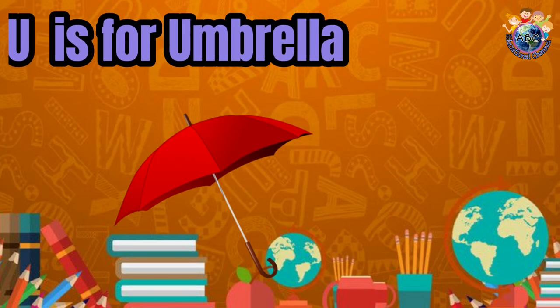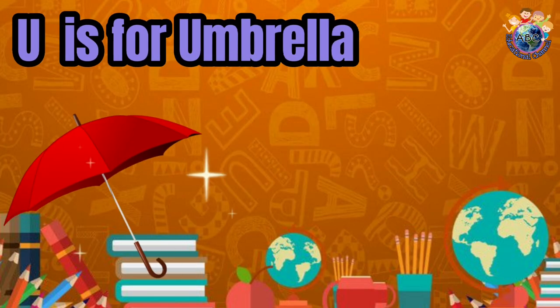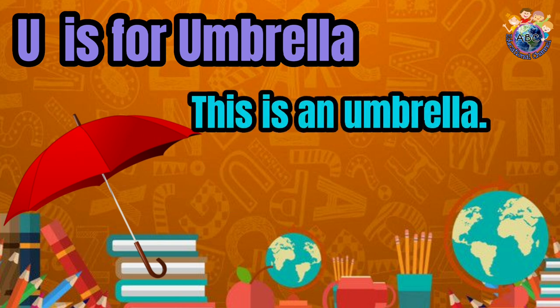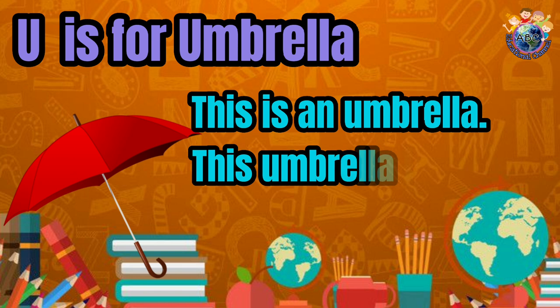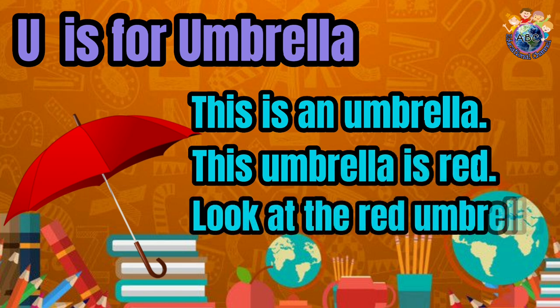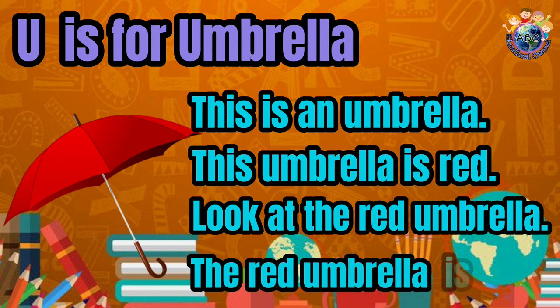U is for umbrella. This is an umbrella. This umbrella is red. Look at the red umbrella. The red umbrella is big.